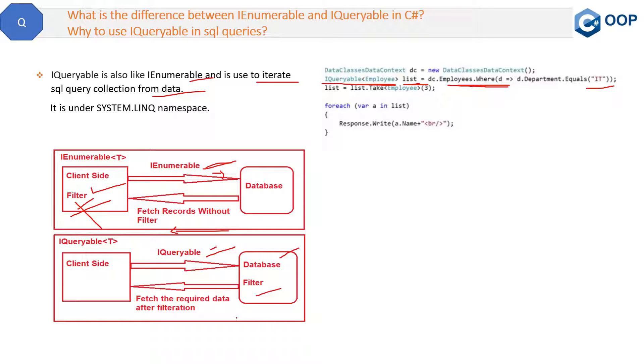network to the server side. So in that manner, network load will be less in case we use IQueryable. So that is the reason IQueryable is better than IEnumerable for SQL queries. I hope you got